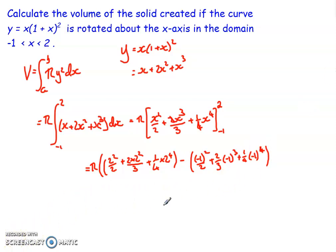If I then just take all of that, work it through, stick it in a calculator, what I end up getting is 103 over 12 pi. So that is the volume of the solid created if I rotate that curve about the x-axis within that domain.